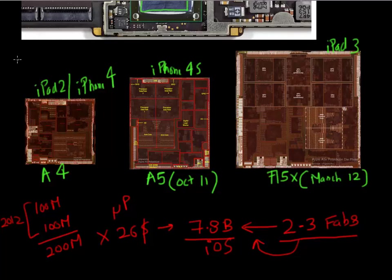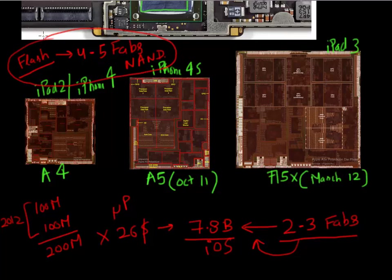Similarly, the flash memory required for these iOS devices is enough to support the total capacity of four to five NAND flash fabs. As you can see here, what I want to make a case for is these mobile devices and the underlying chips have completely changed the semiconductor industry landscape.